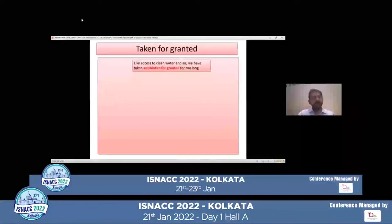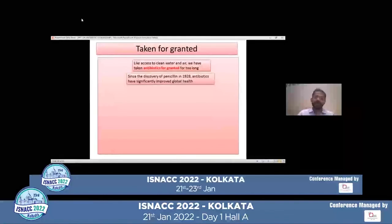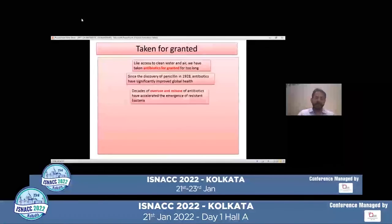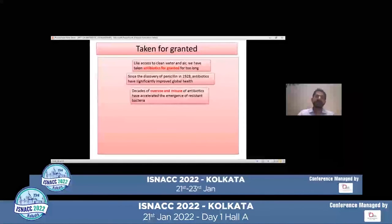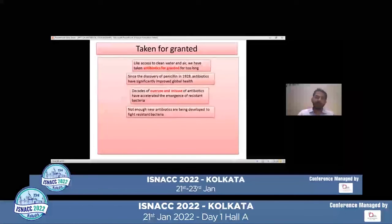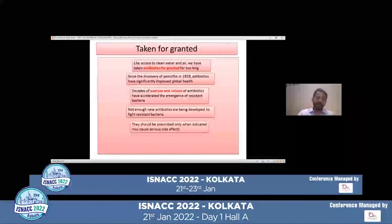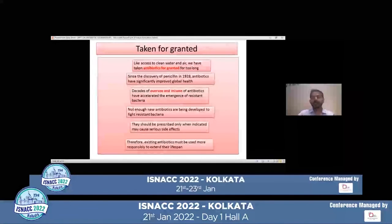Like access to clean water and air, we have taken antibiotics for granted for too long. Since the discovery of penicillin in 1928, antibiotics have significantly improved global health. But decades of overuse and misuse of antibiotics have accelerated the emergence of resistant bacteria, and not enough new antibiotics are being developed. They should be prescribed only when indicated because they may cause serious side effects, and existing antibiotics must be used more responsibly to extend their lifespan.